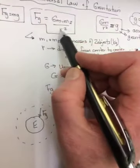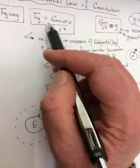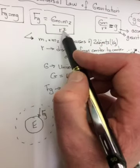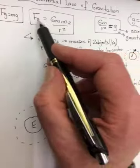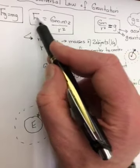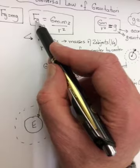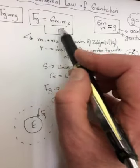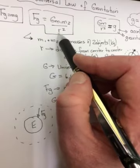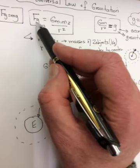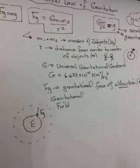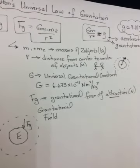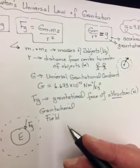This is called an inverse square law. So the further you get away from the object, if you double R, the F's going to get doubled squared smaller. So it's going to get four times smaller. So if R gets bigger, Fg is going to get smaller. That's the inverse. And it's going to get smaller by a square of the factor. If R gets smaller, Fg is going to get bigger by a square of the factor. So they're inversely proportional, but it's the inverse square.